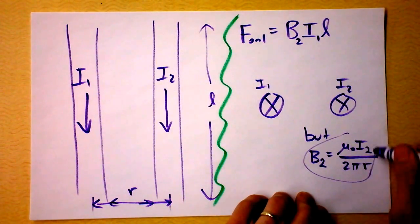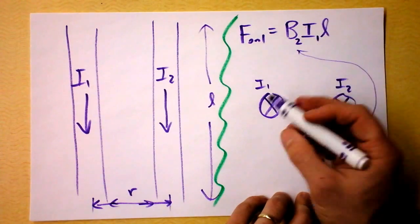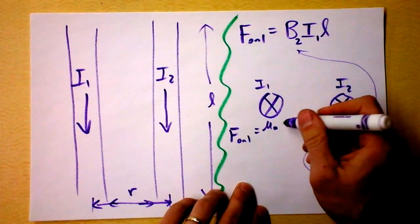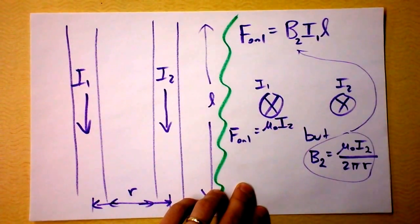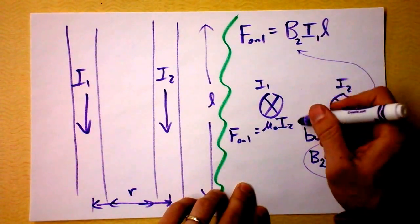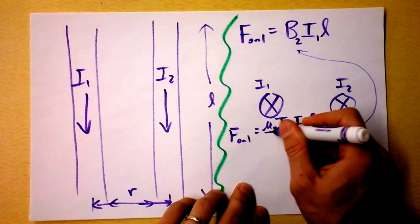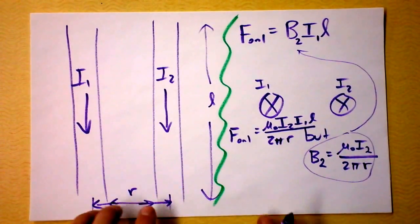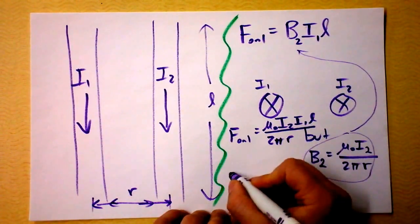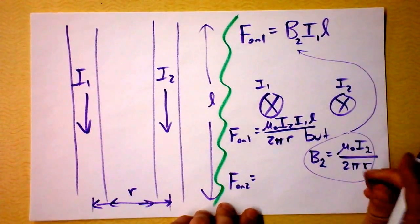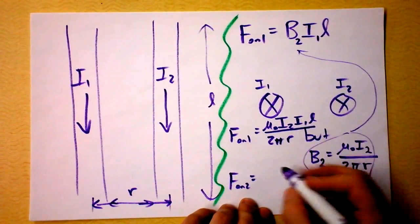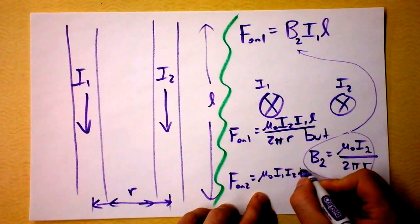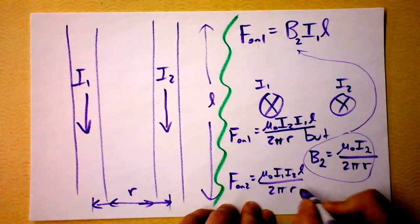And now I'm going to take this and plug it into here. So the force on 1 is μ₀ times I2 times I1 times L divided by 2π times the separation of the centers of the two wires. I want to point out also that the force on 2, Newton's third law tells us what that's going to be.